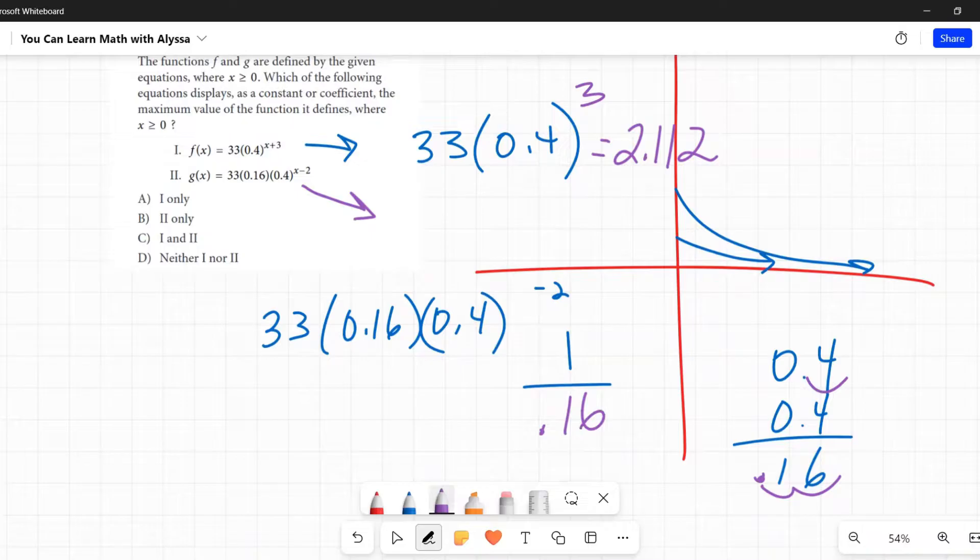All right, so we know that this is now 0.16. So now I have 33 times 0.16 times 1 over 0.16. Those are going to cancel out. It's like 5 times one-fifth, 6 times one-sixth, 8 times one-eighth, all of those are equal to 1. So 0.16 times 1 over 0.16 is equal to 1. So that all cancels out, just becomes 1. 33 is my answer when I do all that. All that equals just 33.